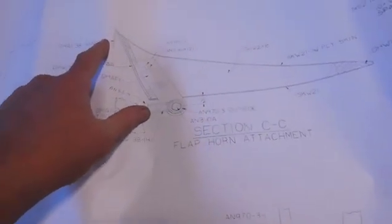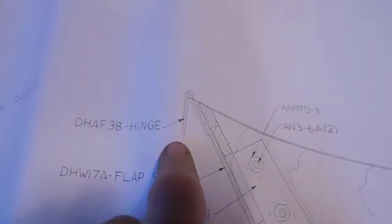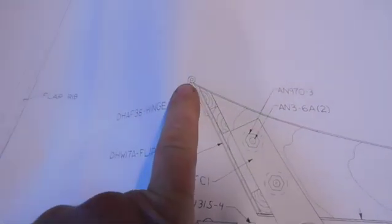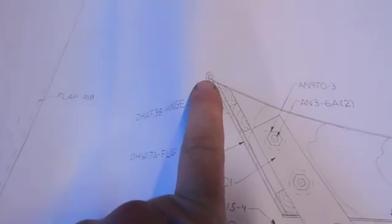a couple of little details when you're doing this. When the rib, or when the flap is getting mounted to the wing, on a little hinge there, the hinge has to be above the line of the wing.